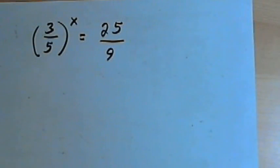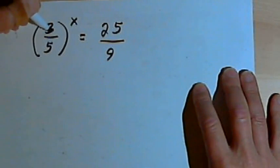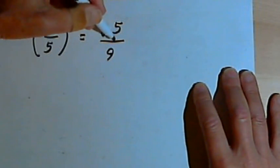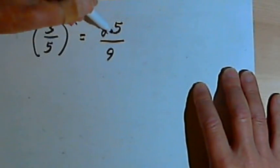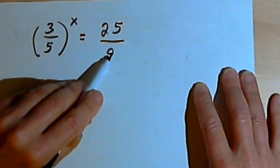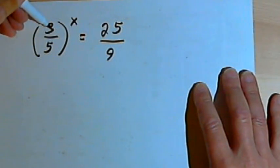And let's do one more. Once again, we're looking for a common base. This time I've got fractions. I've got 3 over 5 to the x equals 25 over 9. Well realize that 25 is 5 squared, and I've got a 5 over here on the other side of the equation. And 9 is 3 squared, and I've got a 3 over here on the other side of the equation.